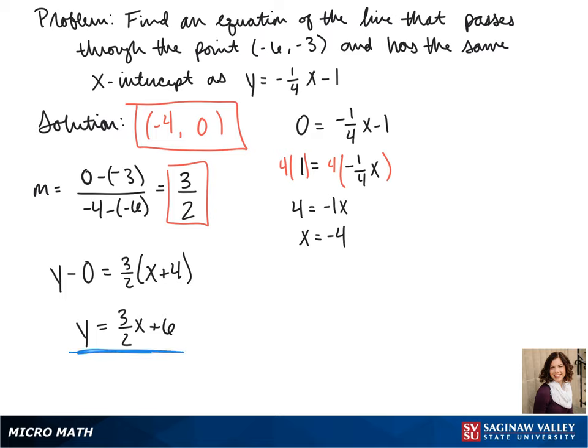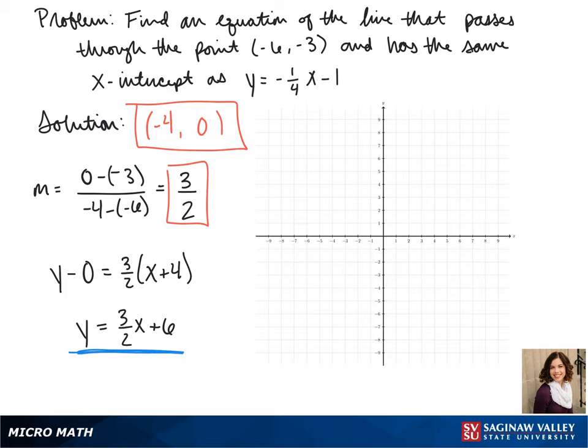This is our equation in slope-intercept form. To see what our graph would look like, we can plot our x-intercept of (-4, 0), our point of (-6, -3), and our y-intercept of 6.